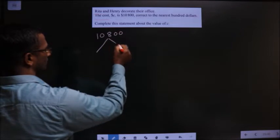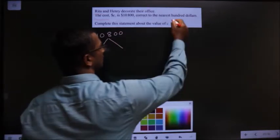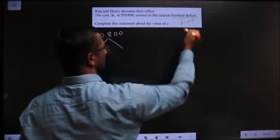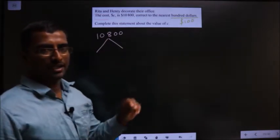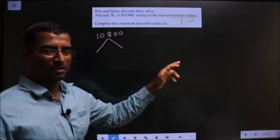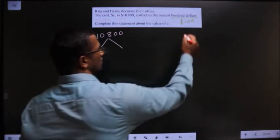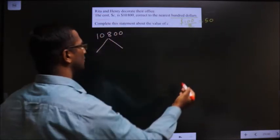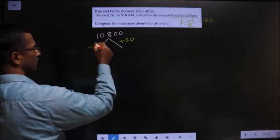Now, what should I add and subtract? That will be decided by this — it is nearest to $100. How do we decide what should be added and subtracted? It's nearest to whatever number, so you should do half of that. Half of 100 is 50, so you should add 50 and subtract 50.